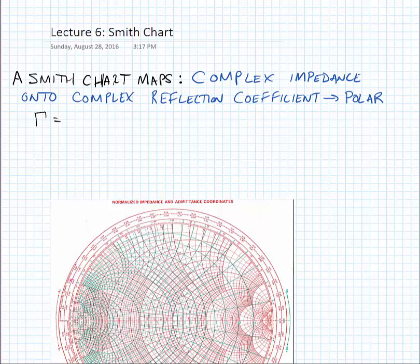Gamma is a ratio of the impedance of interest minus the characteristic impedance over the impedance of interest plus the characteristic impedance.